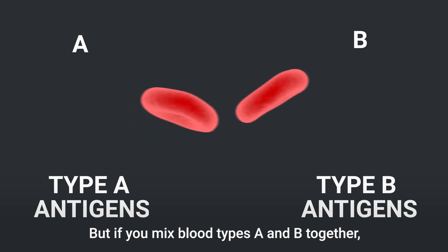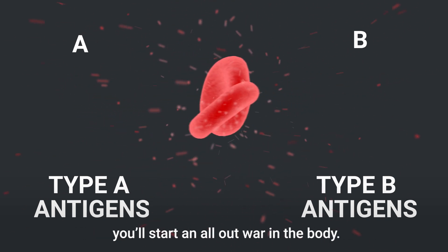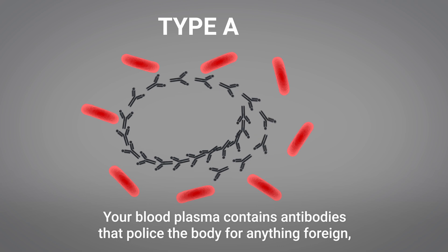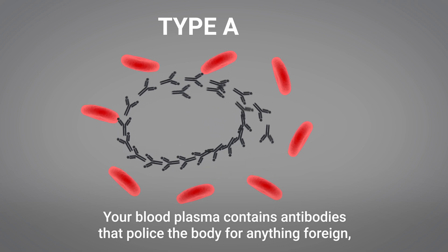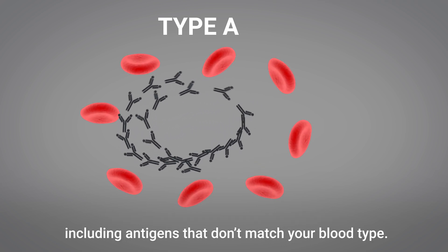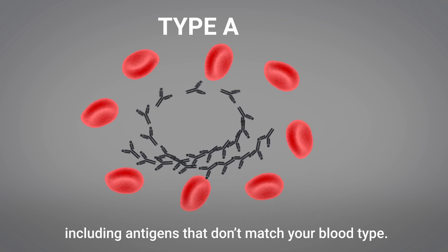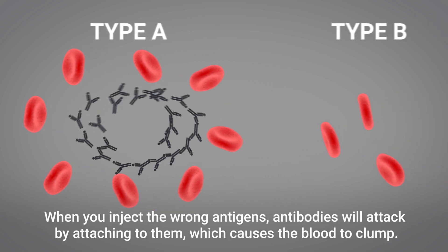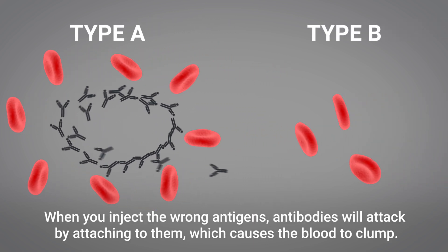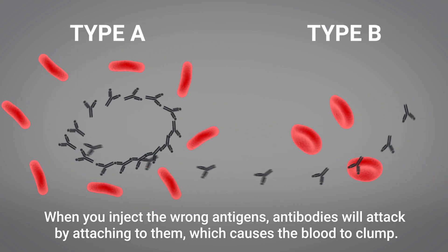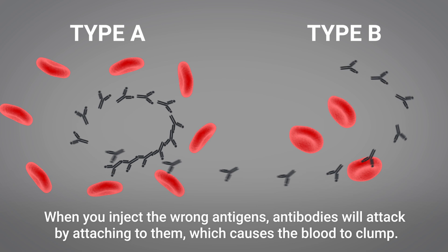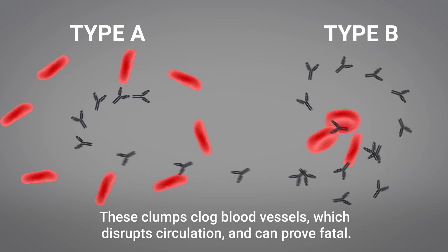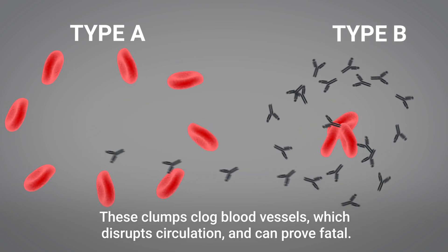But if you mix blood types A and B together, you'll start an all-out war in the body. Your blood plasma contains antibodies that police the body for anything foreign, including antigens that don't match your blood type. When you inject the wrong antigens, antibodies will attack by attaching to them, which causes the blood to clump. These clumps clog blood vessels, which disrupt circulation and can prove fatal.